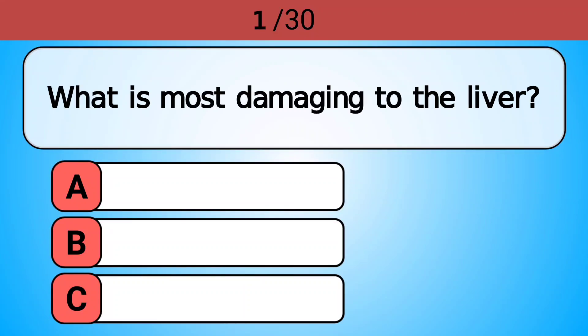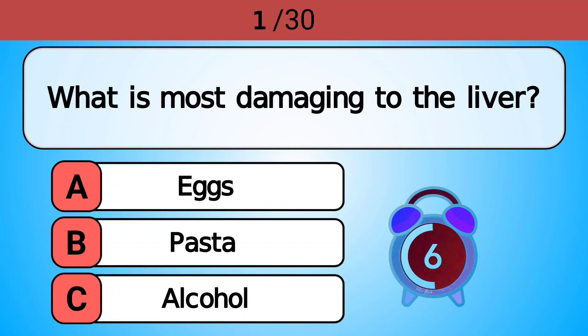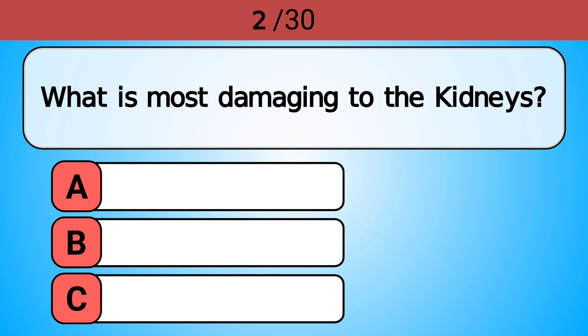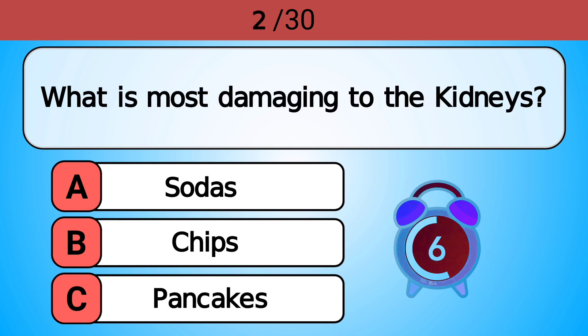What is most damaging to the liver? Answer C, alcohol. What is most damaging to the kidneys? Answer A, sodas.